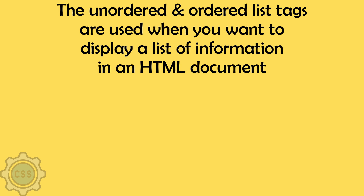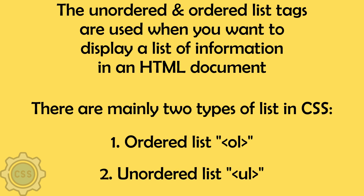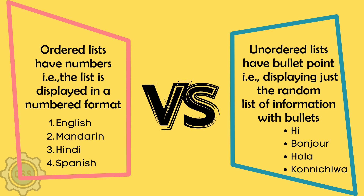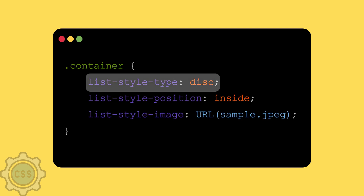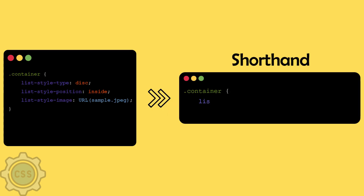The unordered and ordered list tags are used when you want to display a list of information in an HTML document. There are mainly two types of lists in CSS: ordered list and unordered list. Unordered lists have bullet points displaying a random list of information, while ordered lists have numbers displayed in a numbered format. Here is how you write the list property to set various options — type, position, image, and so on — and the same can be written with just list-style, giving all the parameters separated by a space.